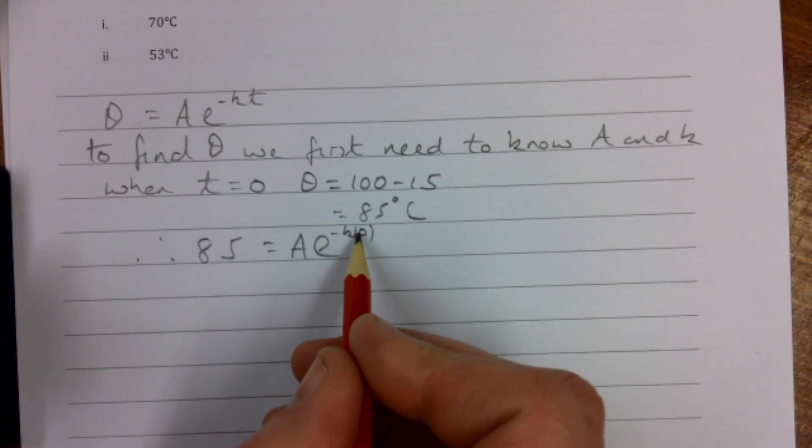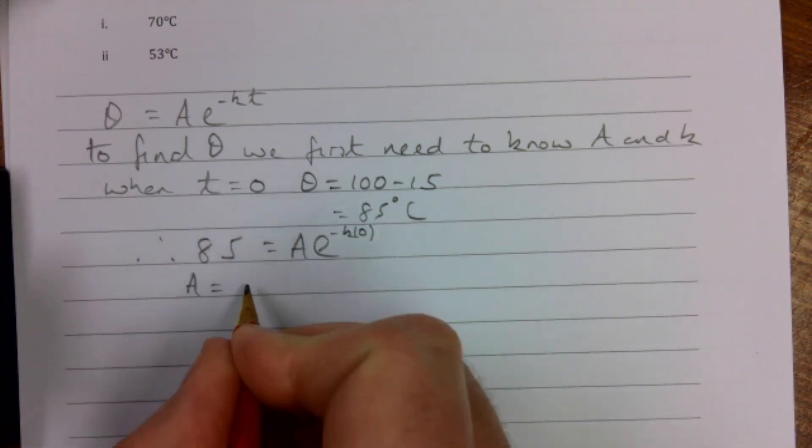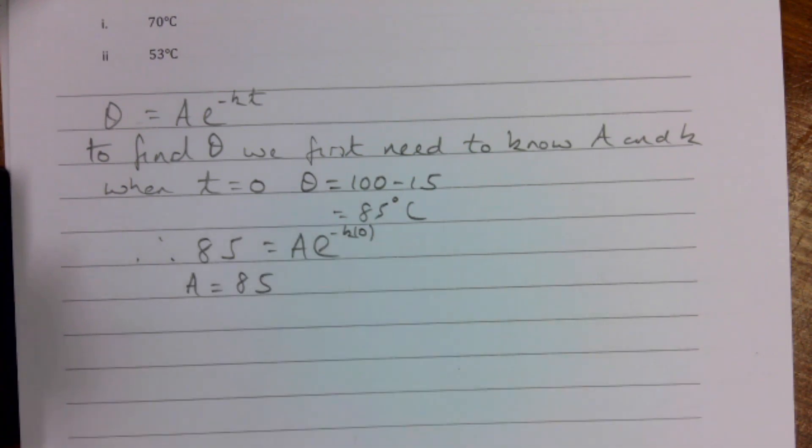E to the power of 0 doesn't give you 0, it gives you 1 of course. So that means our A is 85. So we're up and running.